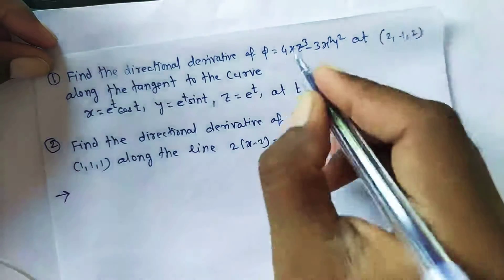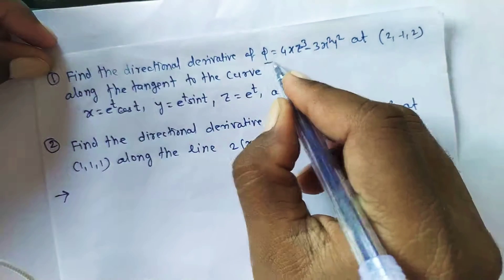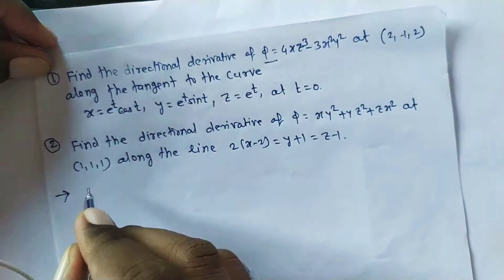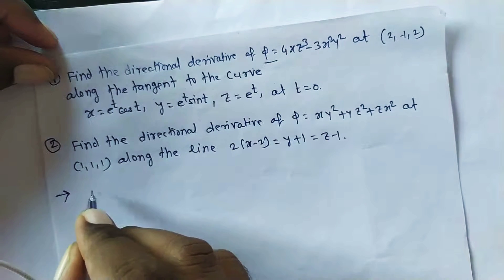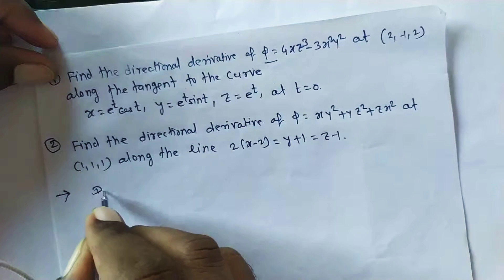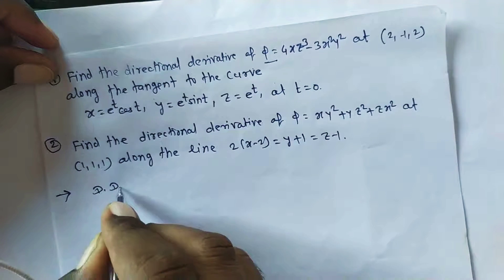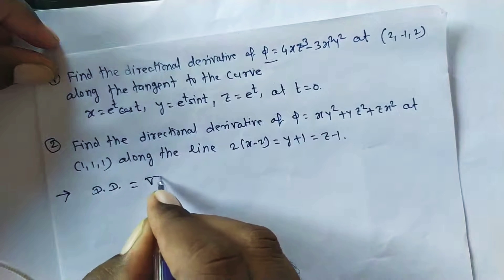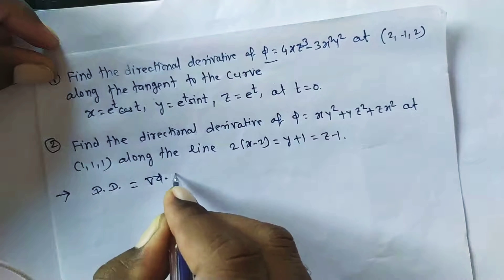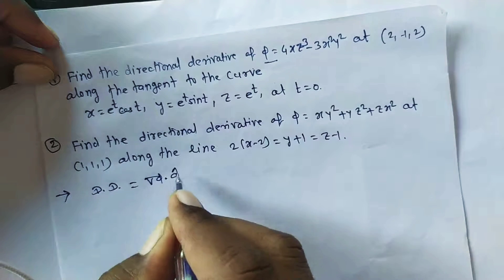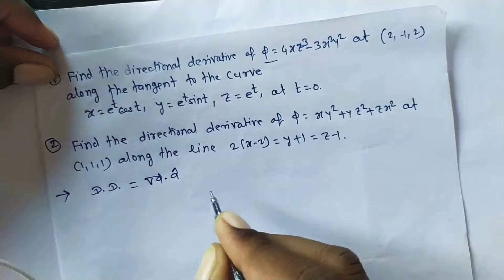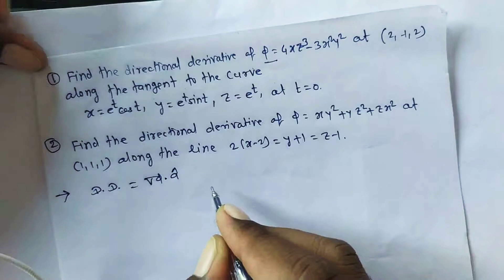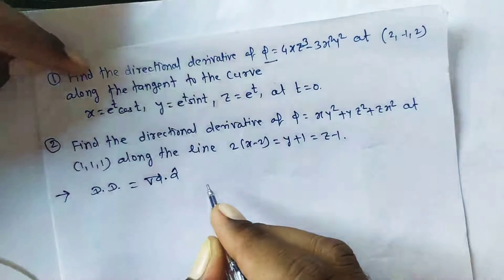We have to find the directional derivative of the scalar point function φ. For finding the directional derivative, the most important thing is the formula: directional derivative = ∇φ · â, where â is the unit vector in the direction of ā.